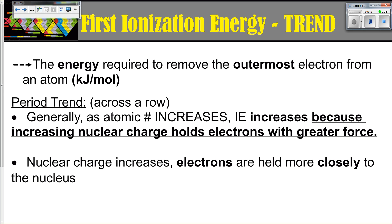Ionization energy is, by definition, the energy required to remove the outermost electron from an atom. It is quantifiable and we measure it with a unit of kilojoules per mole, which is really going to be important in the future doing stoichiometry.